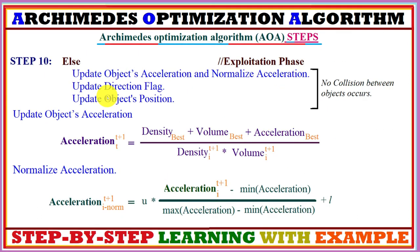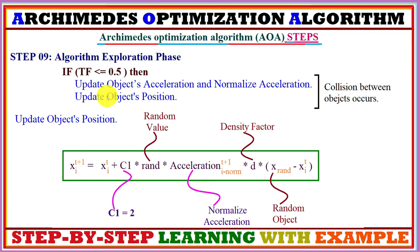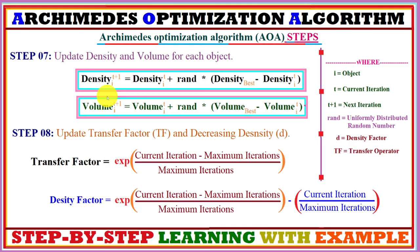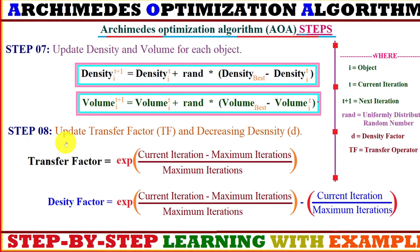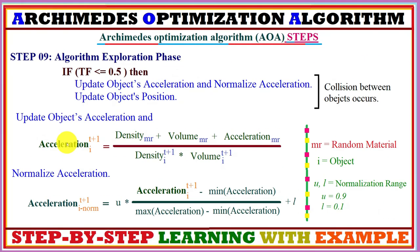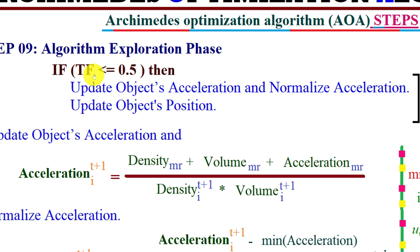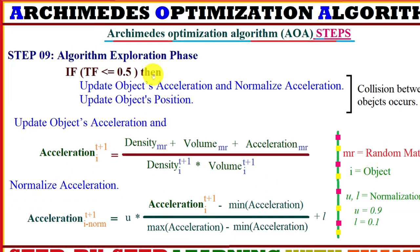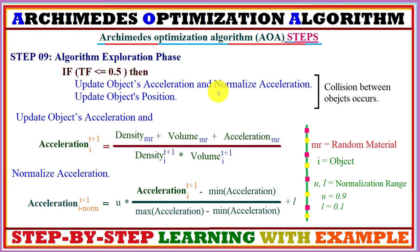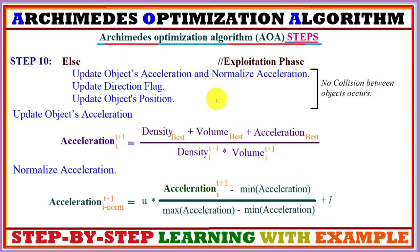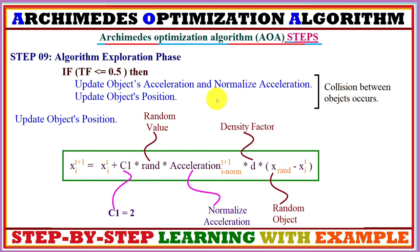We then perform the exploration or exploitation phase based on the transfer factor value computed in step 8. If the transfer factor value is less than or equal to 0.5, we perform the exploration phase — meaning collision between objects occurs. If this condition is not true, we perform the exploitation phase — meaning there is no collision between objects.